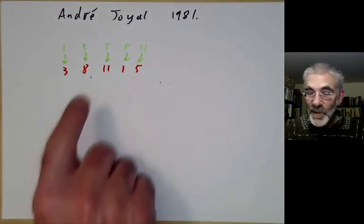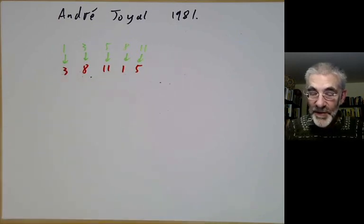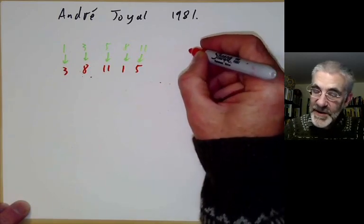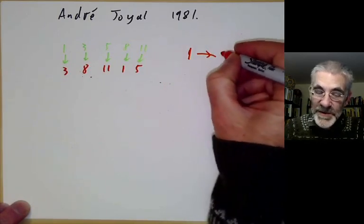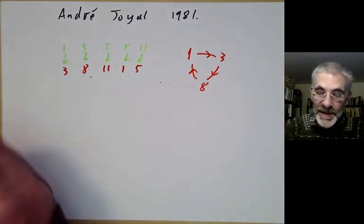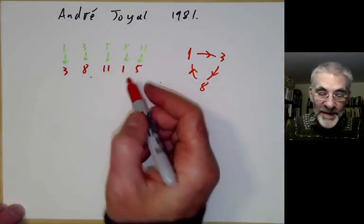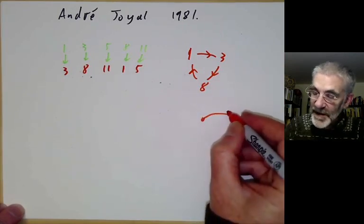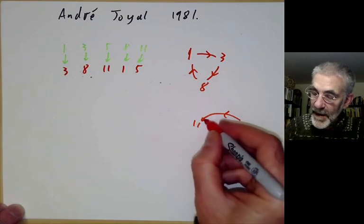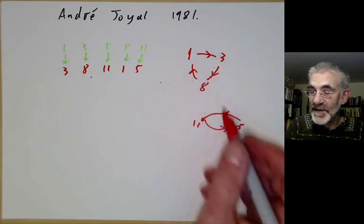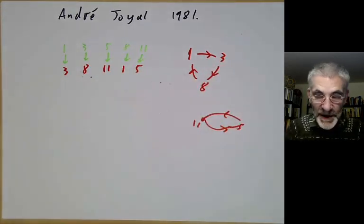There's a second way to describe the permutation. This takes 1 to 3, 3 to 8, and 8 to 1. So I could indicate that just by drawing: 1 goes to 3, 3 goes to 8, and 8 goes to 1. Similarly, 5 goes to 11 and 11 goes to 5. So I draw 5 here, it goes to 11, and 11 goes to 5. This is two different ways of indicating this permutation of these five points.